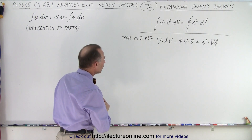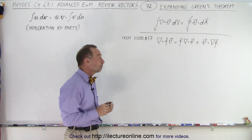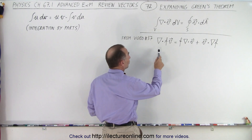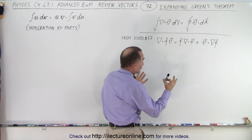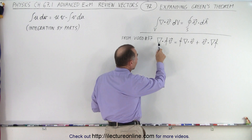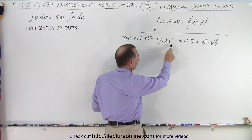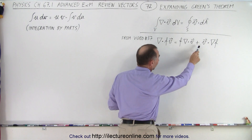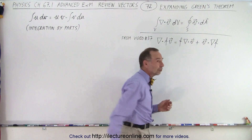What did we show in video number 37? In video number 37 we showed, because we used the product rule essentially, that the divergence of the product of a function and a vector is equal to the function times the divergence of the vector plus the vector times the gradient of the function.